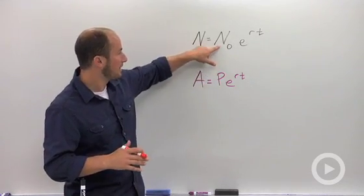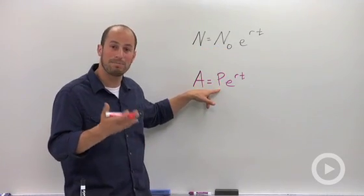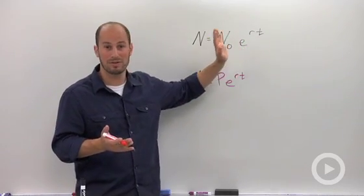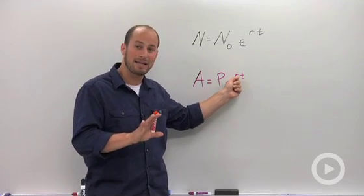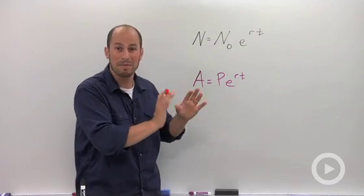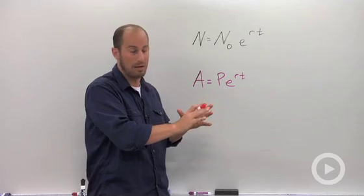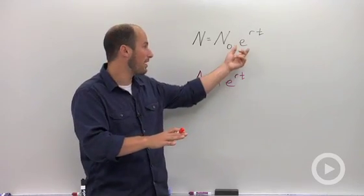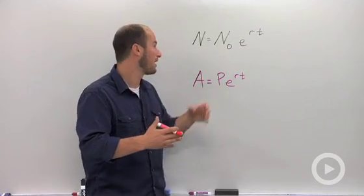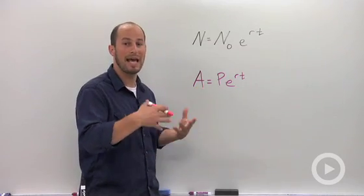N₀, or N sub zero, is our initial amount, which corresponds directly to P, the principal or initial amount. We have e^(rt)—those are exactly the same. Rate isn't exactly like a percent, like we had with interest where 4% becomes 0.04. It's a little more abstract, typically a more complicated number, but it's still a rate that relates to this problem. T is still time—for our exponential growth it could be in days, hours, whatever—but it's still just the time. This term by itself on the left is just the ending amount.